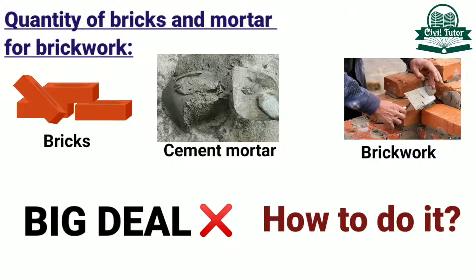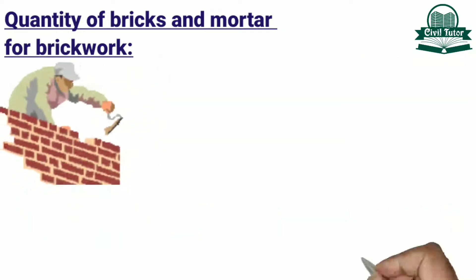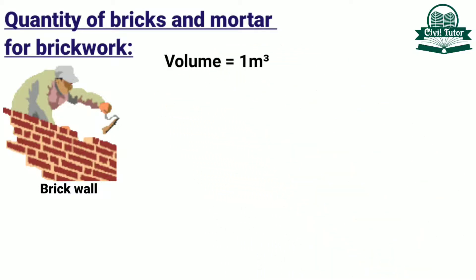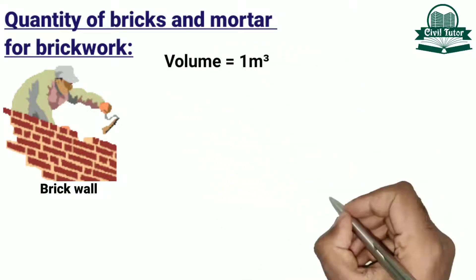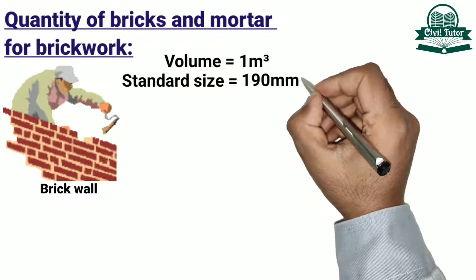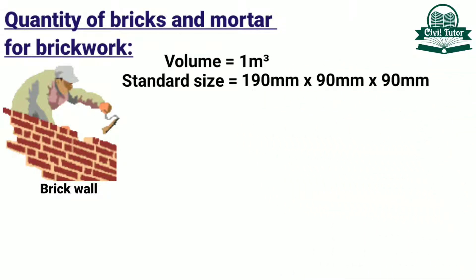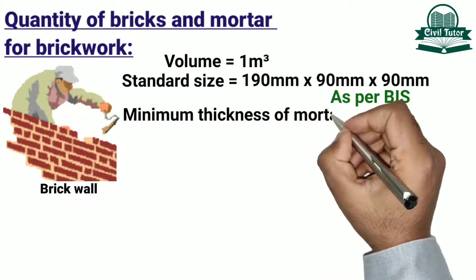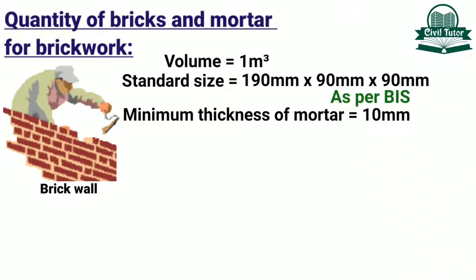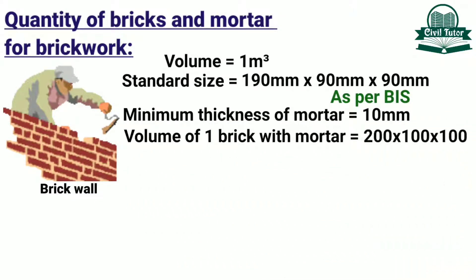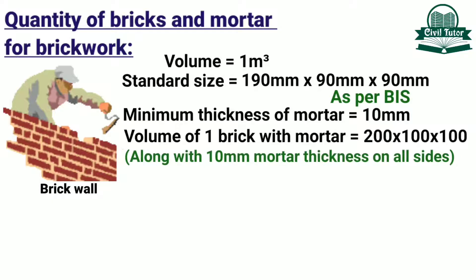Let's illustrate this concept with the help of an example. Suppose we need to construct a brick wall of total volume 1 m³, using the standard size of bricks which is 190 mm × 90 mm × 90 mm as per BIS, i.e. Bureau of Indian Standards. The minimum thickness of cement mortar is 10 mm. Volume of 1 brick with mortar will be equal to 200 × 100 × 100 mm, along with 10 mm mortar thickness on all sides.